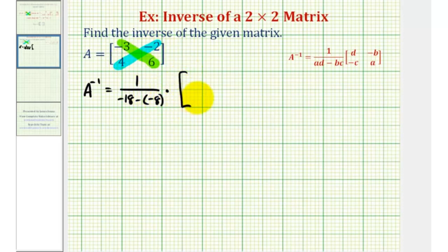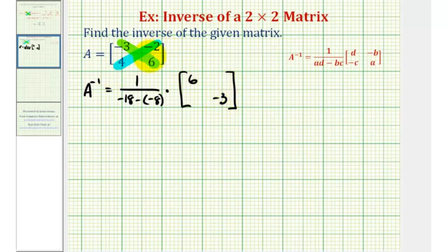Times the matrix where we'll switch the positions of the elements negative three and six — we'll put the six here and the negative three here. And for the other two elements, we'll change the sign, so this negative two becomes positive two, and this four becomes negative four.